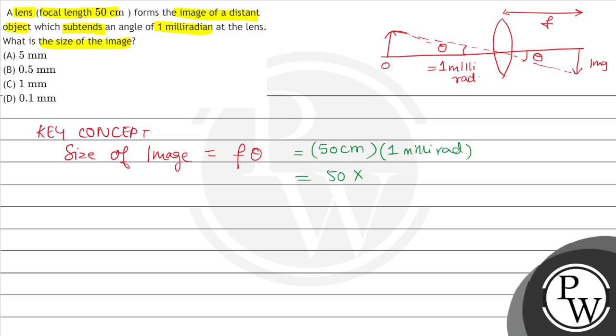So what will this value be? This is equal to 0.5. And this is in cm, so we will convert it to mm. So what will happen? 0.5 mm.